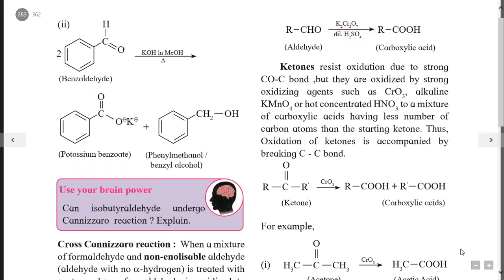For example, CH3–C(=O)–CH3 (acetone, dimethyl ketone) when treated with CrO3 gives two molecules of acetic acid (CH3COOH). A second example: CH3–CO–C2H5 (butane-2-one) when treated with CrO3 gives acetic acid as one product and propionic acid as the second product. This is the oxidation of ketones using the strong oxidizing agent CrO3.